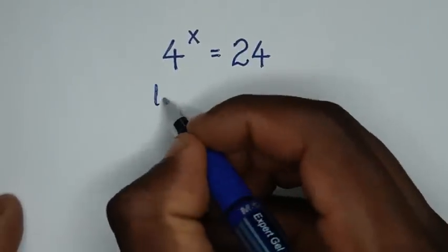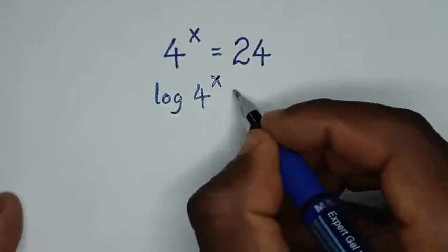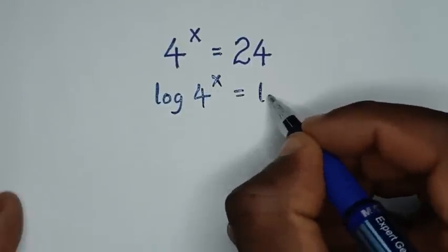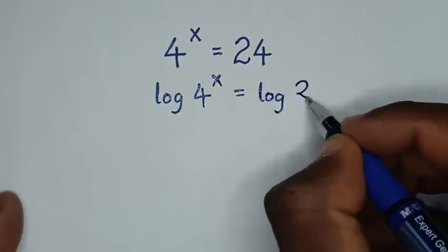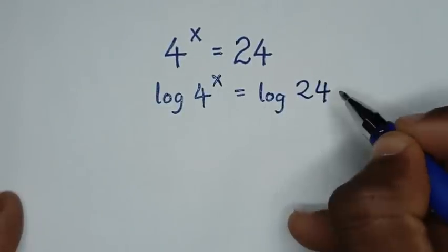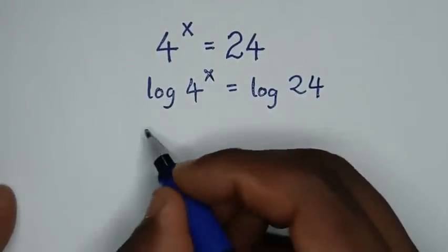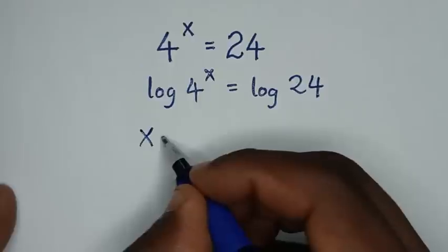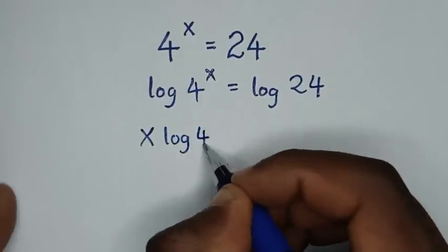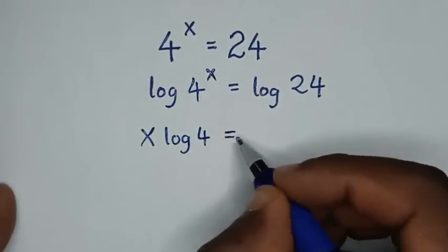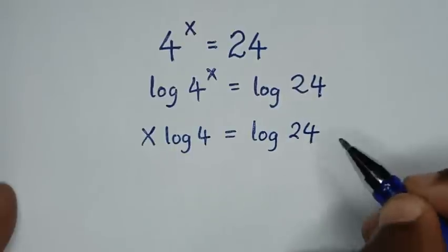So it will be log of 4 power x is equal to log of 24. Then this power of x will move to the base, so it will be x times log of 4 is equal to log of 24.